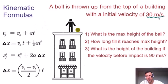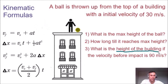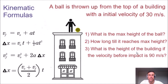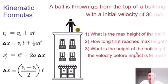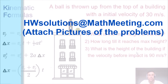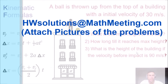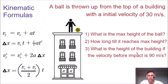We know that the initial velocity of the ball being thrown up is equal to 30 meters per second, and before impact the velocity is equal to 90 meters per second. Using this information, we need to find the height of the building. My name is Chris and I am here to help you with all of your math and physics needs. I do offer homework solutions — send me an email to homeworksolutions@mathmeeting.com with pictures and I will get back to you with a quote.